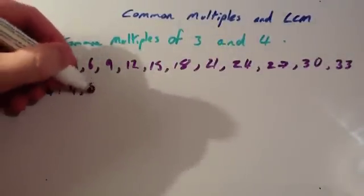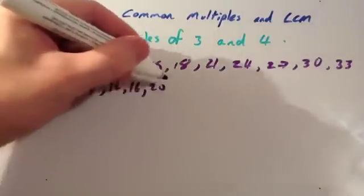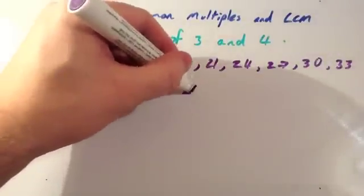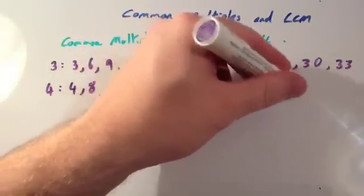So multiples of 4: 4, 8, 12, 16, 20, 24, 28, 32, 36, and we'll just stop there.